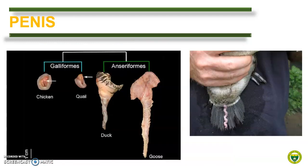In birds, the penis is also called the phallus, and it can either be non-protrusible or protrusible. In a rooster or male chicken, the phallus is characteristically non-protrusible. In drakes or male ducks, or ganders or male geese, the phallus is protrusible, as shown here.